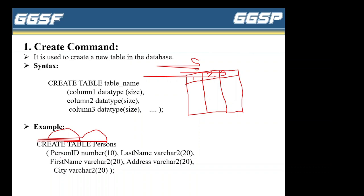Person ID has data type NUMBER with size 10, then comma. The second column is last name — data type VARCHAR2, size 20, comma. Then first name — VARCHAR2, size 20. Then address — VARCHAR2, size 20. Then city — VARCHAR2, size 20. Close the bracket with a semicolon. Don't forget to put the semicolon at the end of any query.